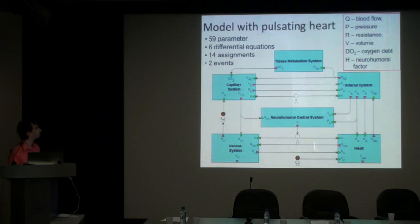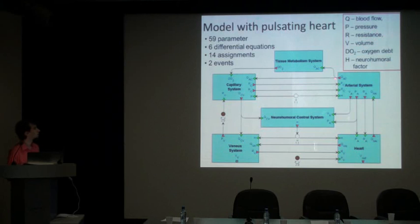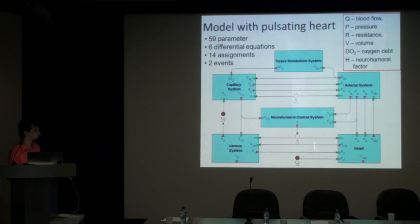There are two main regulation circuits: tissue metabolism utilizing oxygen consumption, and neuro-hormonal control. The main parameters of the model are blood flow, pressure, resistance, volume of reservoir, oxygen consumption, and neuro-hormonal control. Blood flow is passed from heart to arterial system, then to capillary system, then to venous system, and finally the heart demands some blood flow from the venous system. This is a cycle. The model contains only the systemic cycle and only the left ventricle.